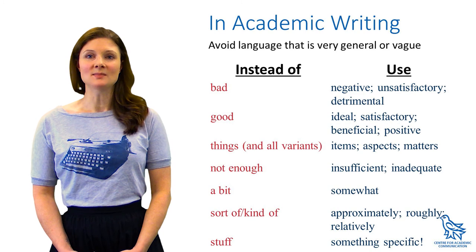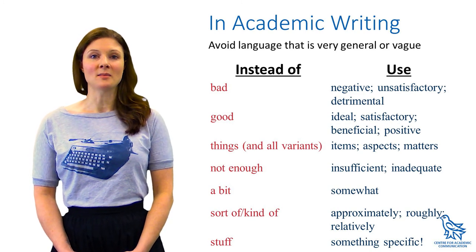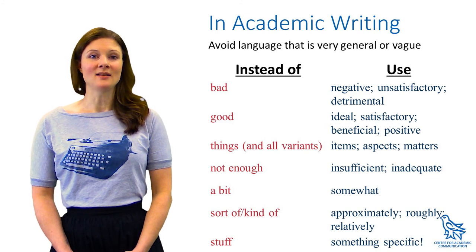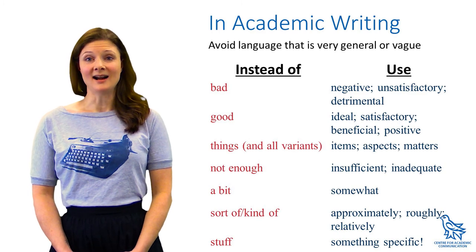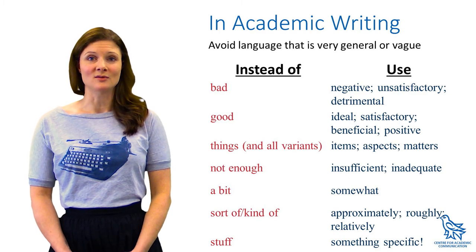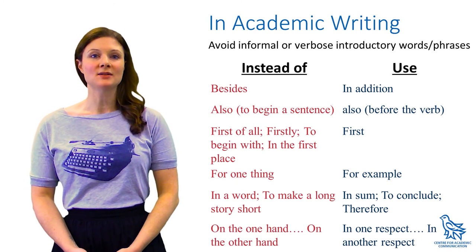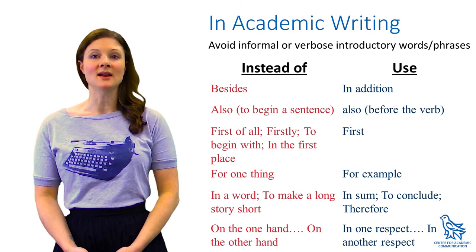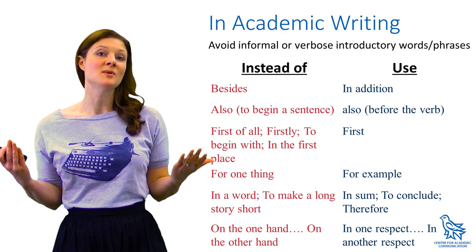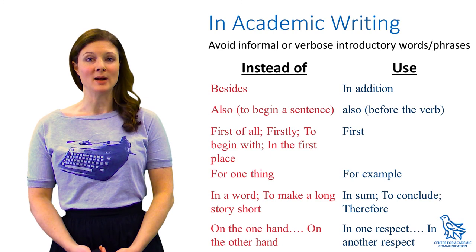With quantities, be specific and use formal terminology. Avoid all variations of the word "thing" whenever possible, and imagine that writing the word "stuff" in an academic essay is like saying the F word in front of your grandma. There are also a few informal introductory phrases and words like "last but not least," "besides," and "first of all" that should be avoided. Another common problem is using "on the one hand" or "on the other hand" but not both — there are two hands. This structure is also quite informal and should probably be avoided anyway.